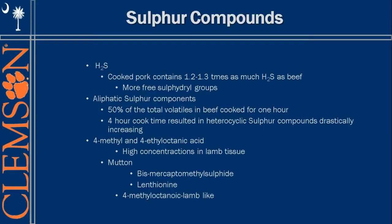Moving on to sulfur compounds — these are usually formed during cooking, largely due to free sulfhydryl groups. Cooked pork can contain 1 to 1.3 times as many sulfur compounds as beef, which contributes to that characteristic pork flavor. The aliphatic sulfur compounds actually account for 50% of the total volatiles in beef cooked for one hour, as scientists found by taking headspace measurements during and after roasting.